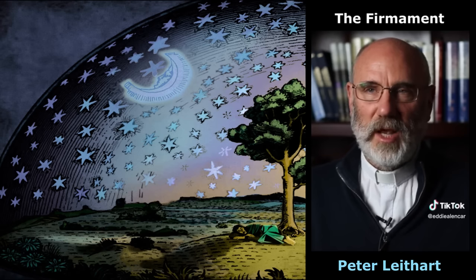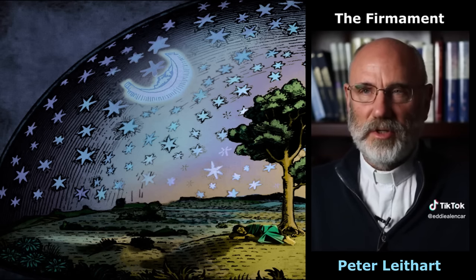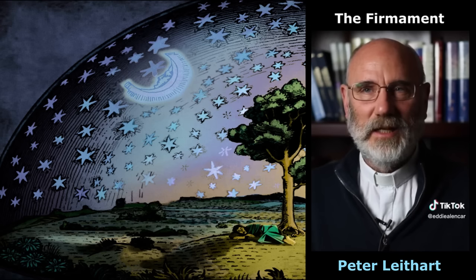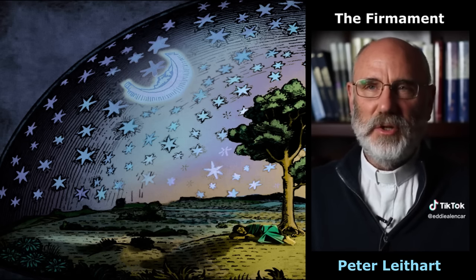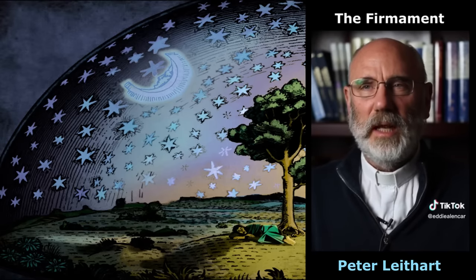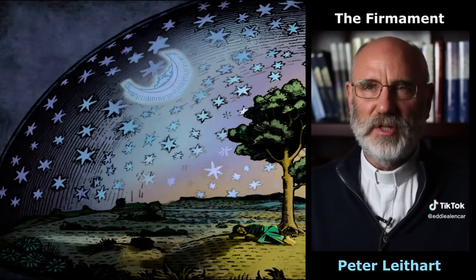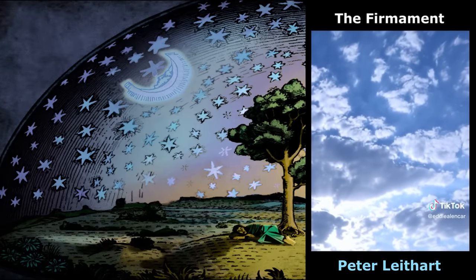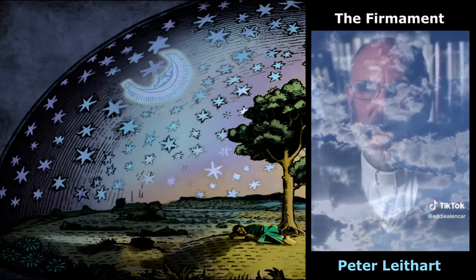So the first form that we have in creation is this distinction between the waters above and the waters below. The Hebrew term for the firmament is rekiah, which means something that's beaten out, beaten flat. It's used to describe a piece of metal that's beaten into a sheet. And at least that's the appearance the firmament has — if we look up to the sky, we look at a dome, and it looks like a piece of blue solid material that's been beaten flat.